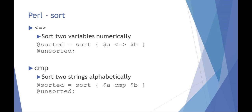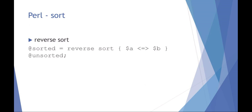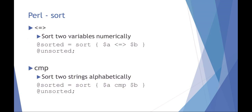In Perl there are a couple of ways to sort. You can sort two variables numerically — if you have an array called unsorted and want it sorted numerically, say 'sorted array equals sort { $a <=> $b }'. If you want alphabetical sorting, you can use cmp. You can also add reverse to get reverse-sorted results, either numerically or alphabetically.